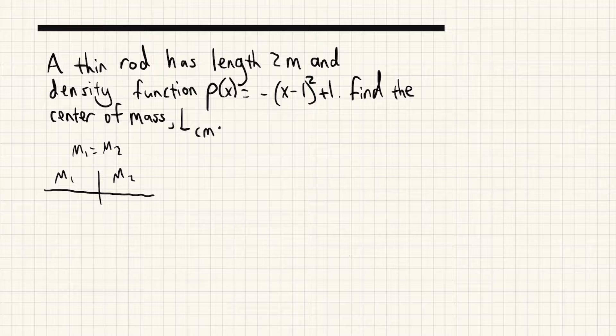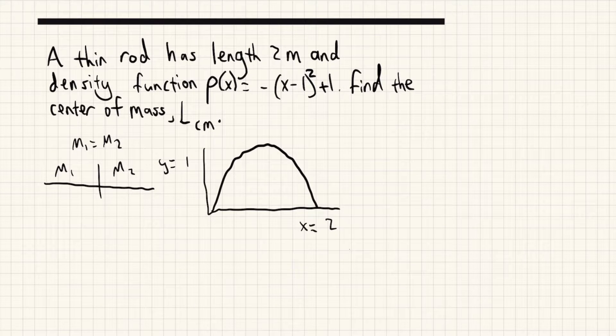However, in this case, we have a varying density. That means that as you move along the rod, the density, the mass in that area will change. So how are we going to do that? So let's just take a quick look at this function. ρ(x) = -(x-1)² + 1. In that case, it just looks like this is a parabola. The top is at y = 1 and it starts at the origin and goes to x = 2, which is the total length.